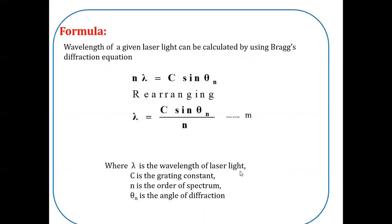Lambda is the wavelength of laser light measured in meter. C is the grating constant, distance between two consecutive lines. n is the order of spectrum. Theta n is the angle of diffraction.